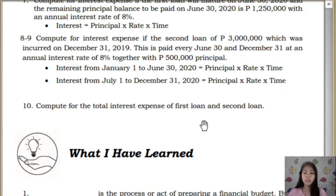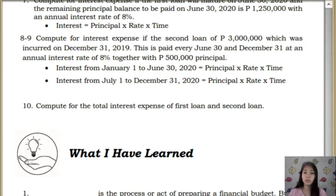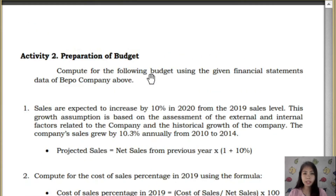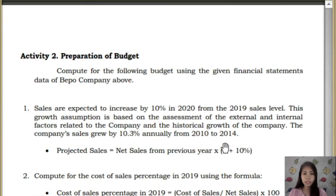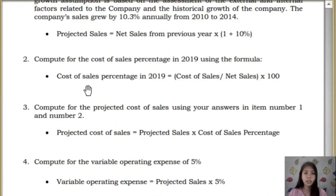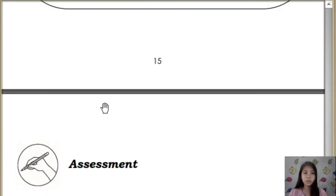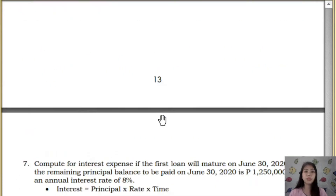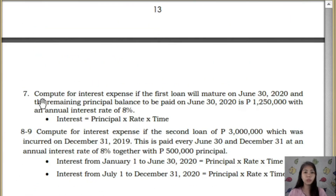For item number 10, compute for the total interest expense of the first loan and second loan. That is: interest expense from item number 7, plus the interest expense from items number 8 and 9. That will be your answer in item number 10. I hope I clarified things there. For the additional activity tool, use your computed data from activity number 2, items number 1 to 10.